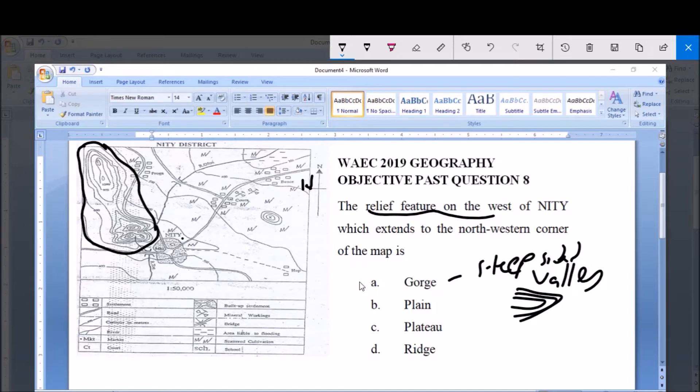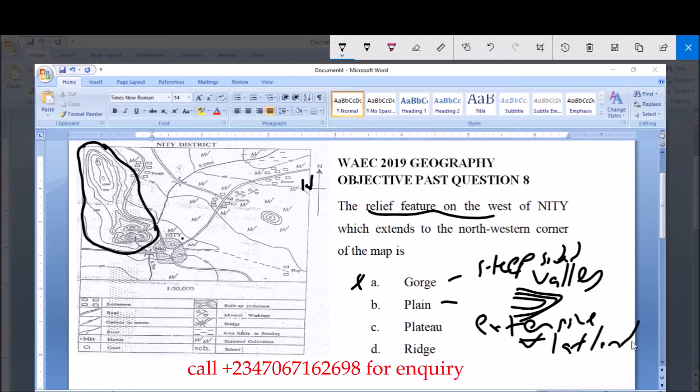into this description. Hence gorge is ruled out. Now option b is plain. Plain is just basically extensive flat land without any elevation, extensive flat land. And there are clearly elevations in this relief feature, which is why contour lines are present.